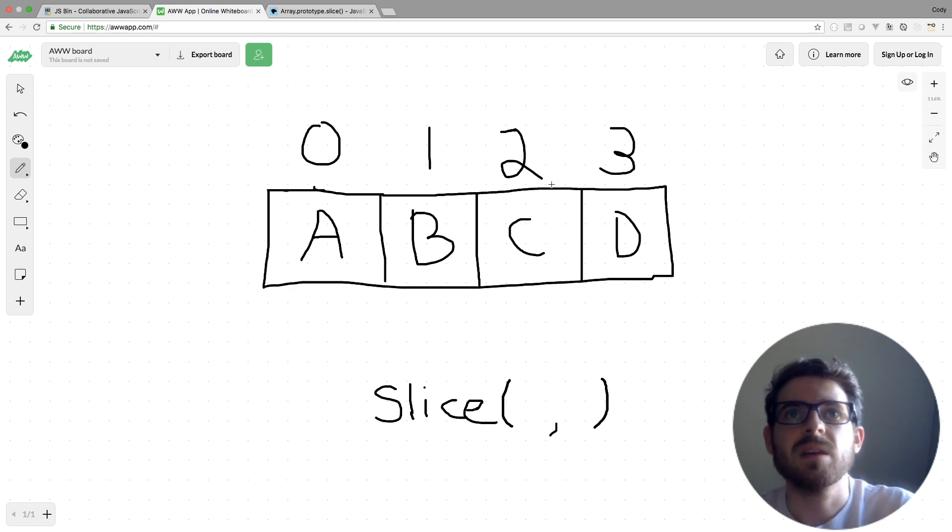Let's say we just wanted to grab BC. For the first argument, we need to pass one because we're trying to grab this index at one here. And then if we wanted to grab all the way up to C, but not including D, you'd simply just put the index that you want to stop at. So I'm going to put three here.